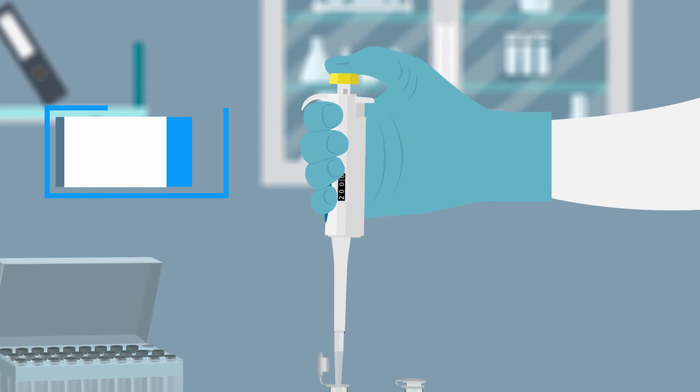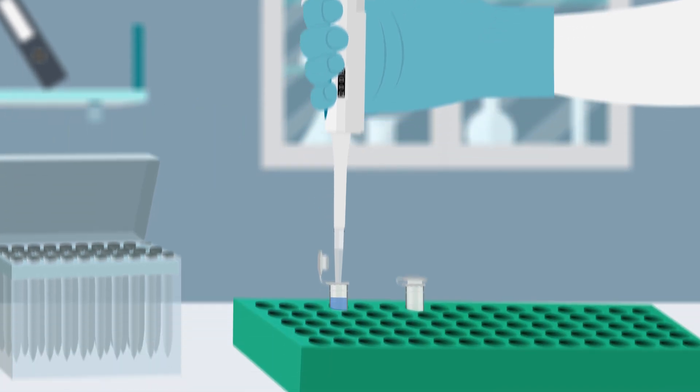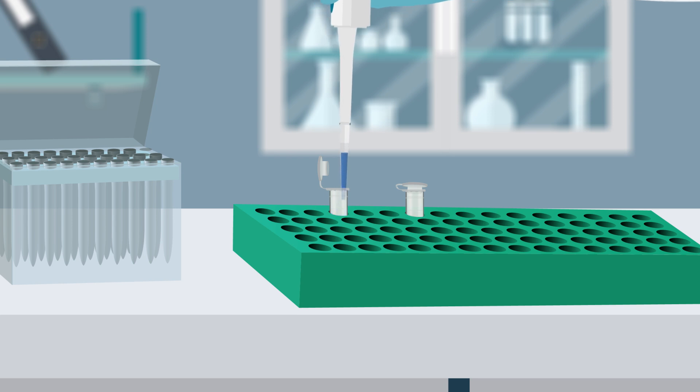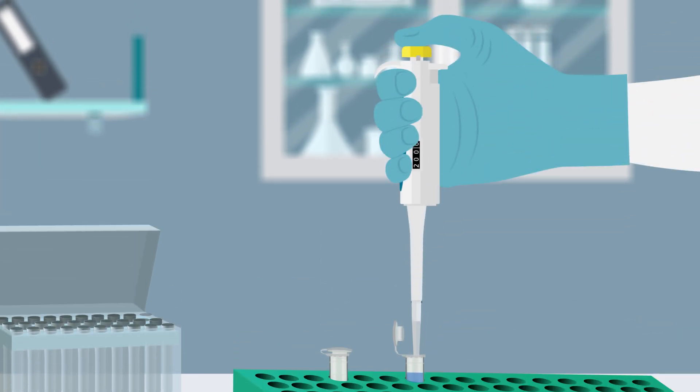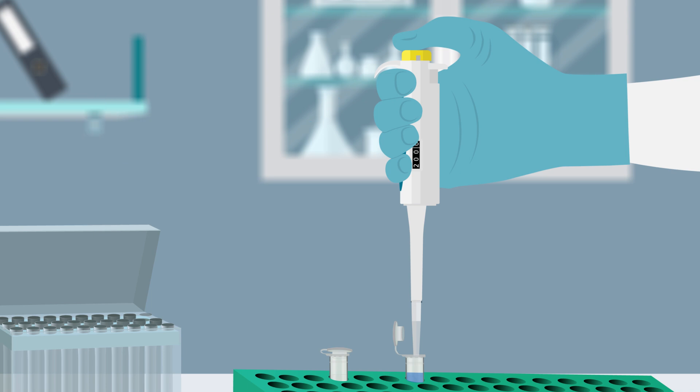To forward pipet, immerse the tip with the micropipet's plunger depressed to the first stop, aspirate the target volume, and dispense. After dispensing, a separate blowout step is used to empty the tip by pressing the plunger to the second stop. This technique is beneficial for most applications.